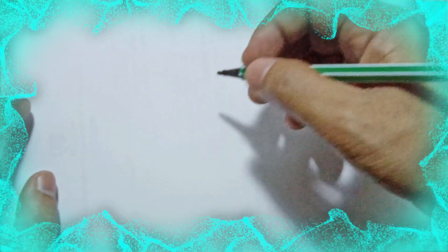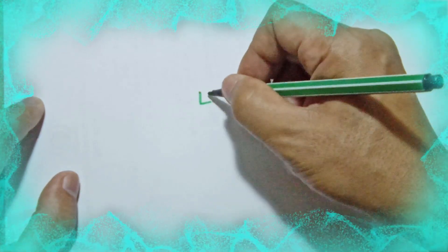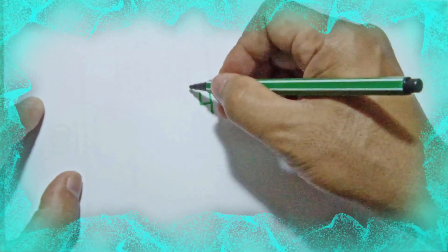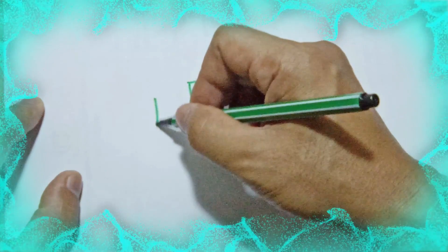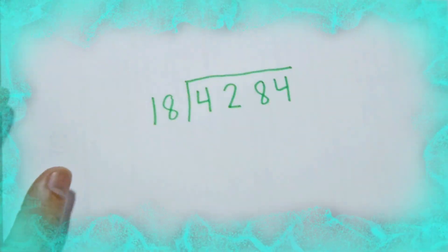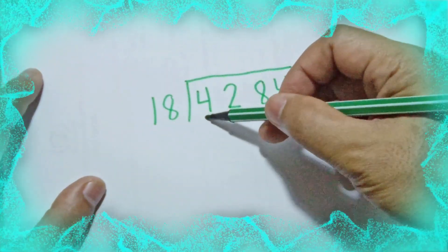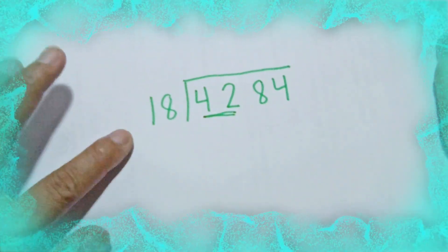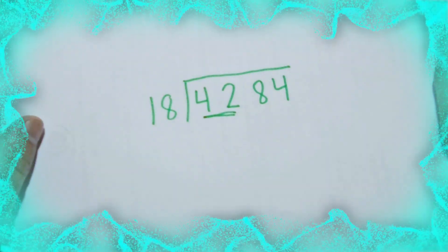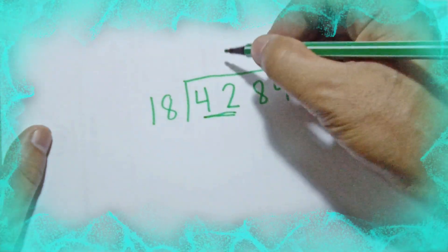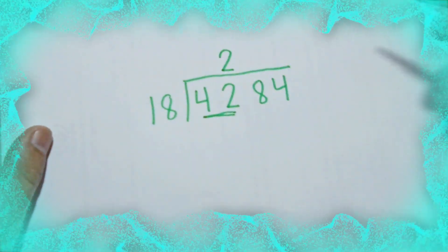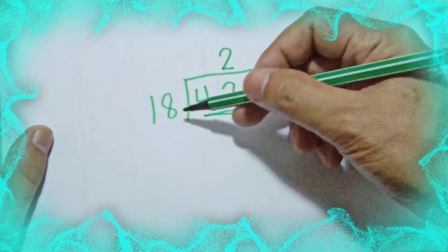For the last example, 4284 divided by 18 — a two-digit divisor. When the divisor is two digits, we automatically take two digits. So how many 18s can you make from 42? We can make 2 eighteens out of 42. 2 times 18 is 36.